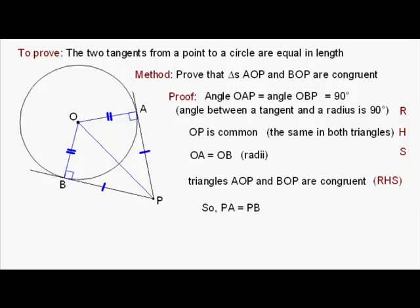And so it follows that PA equals PB. Those two sides are equal to each other, which means we've proved what we set out to do, that the two tangents from a point to a circle are equal in length. That's what we set out to prove.